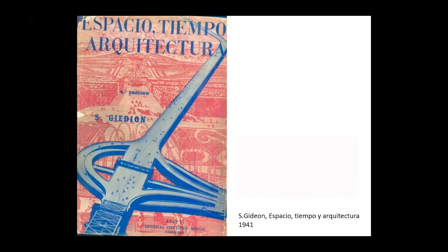Fue propuesto por Gideon como el modelo que ya no se ajustaba al tiempo histórico. Por eso, a manera de collage, le superpuso una autopista. Sifrit Gideon, formado en Ingeniería Mecánica y luego en Historia del Arte, rompe con su espacio-tiempo la perspectiva de Versalles, como también lo hace el cubismo. En base a un montaje, Gideon le superpone a Versalles el espacio moderno.